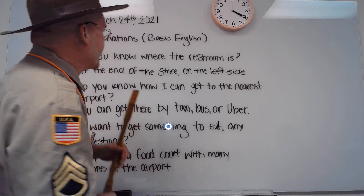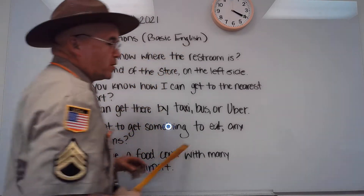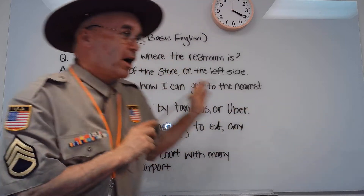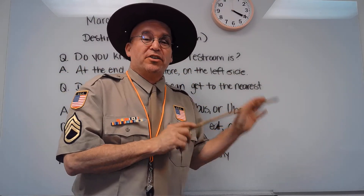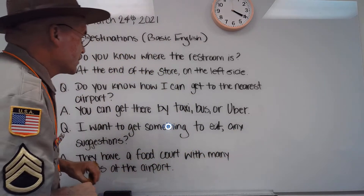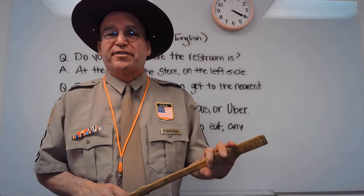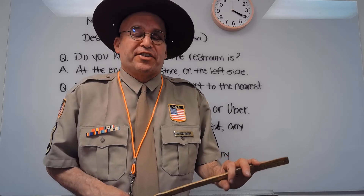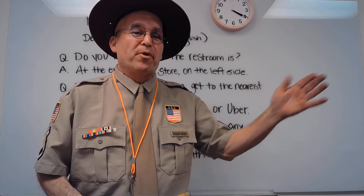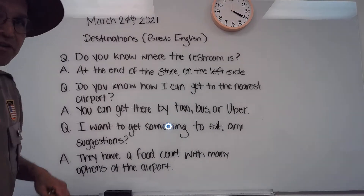Today's lesson plan is destinations, basic English. With this lesson plan, I need you to follow along. When I say a word or tell you to say a sentence, you need to say that sentence with or without me. It's important to learn English when you visit different countries — that way you could communicate. English is a universal language. All these countries you go to, somebody's going to speak English there.